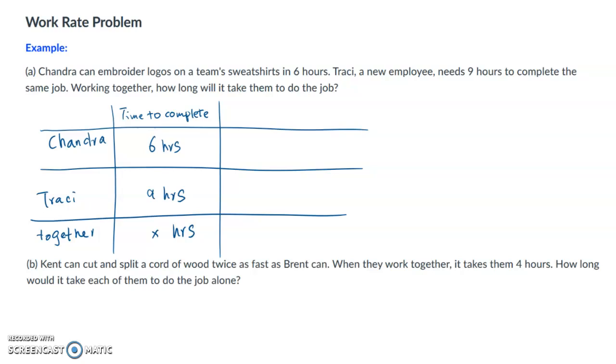So let's say it takes them X hours to complete the job. You have to know this X should be less than six, of course it should be less than nine, because if they're working together it should take them less time.